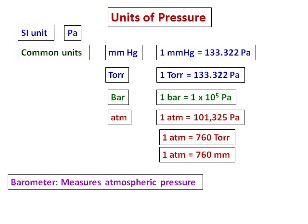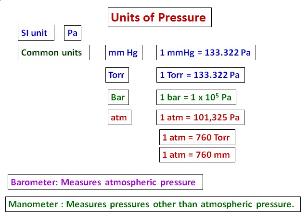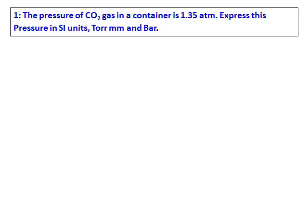A barometer measures atmospheric pressure, while a manometer measures pressures other than atmospheric pressure. You don't need to memorize all the conversions, but remember there are many units for pressure and you should use the appropriate unit depending on the question.